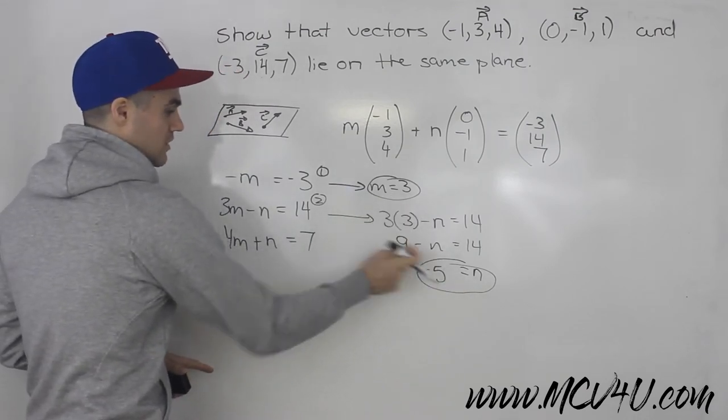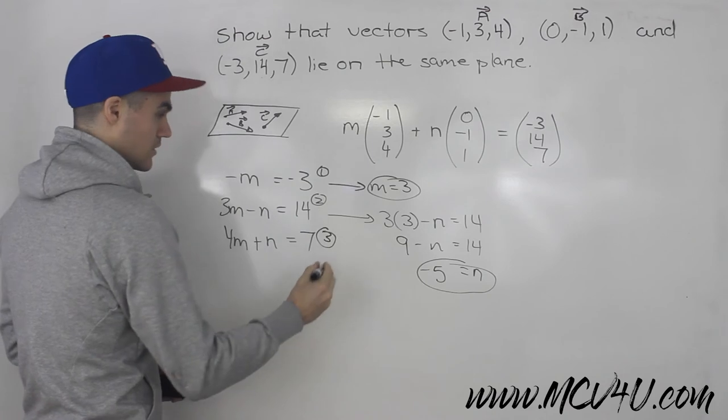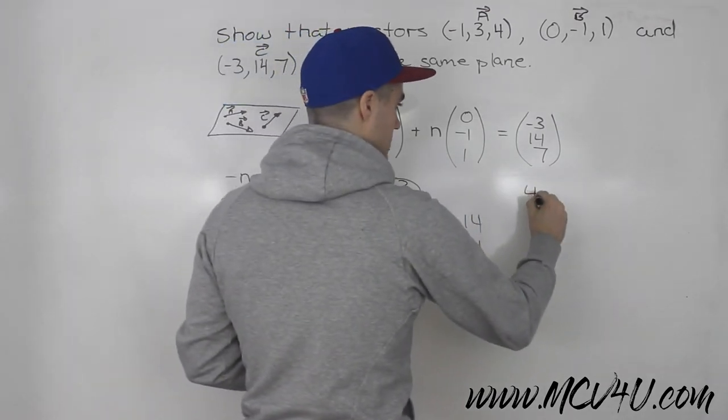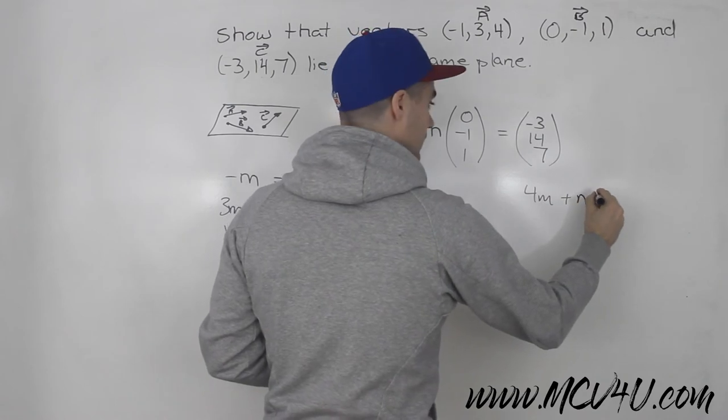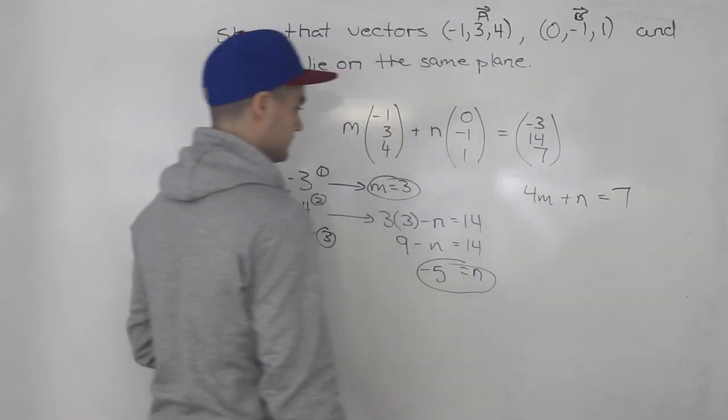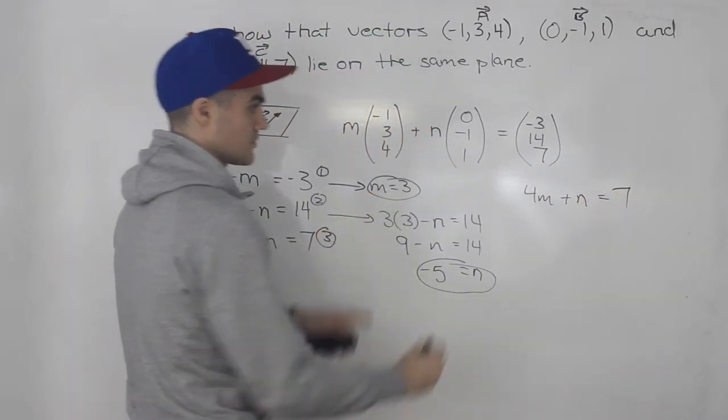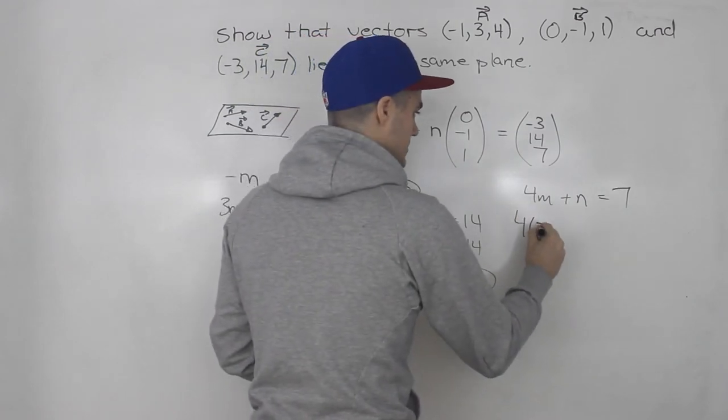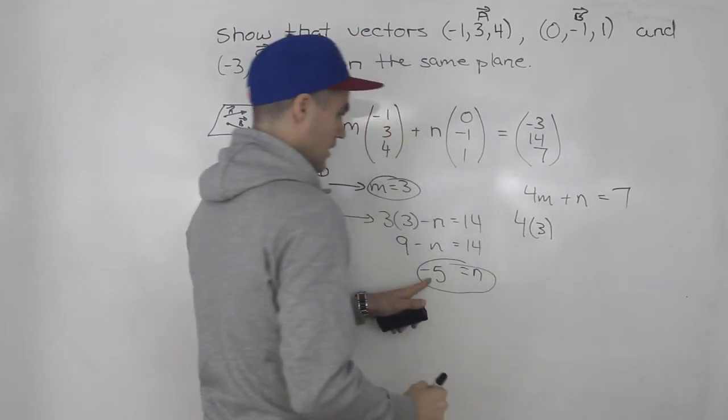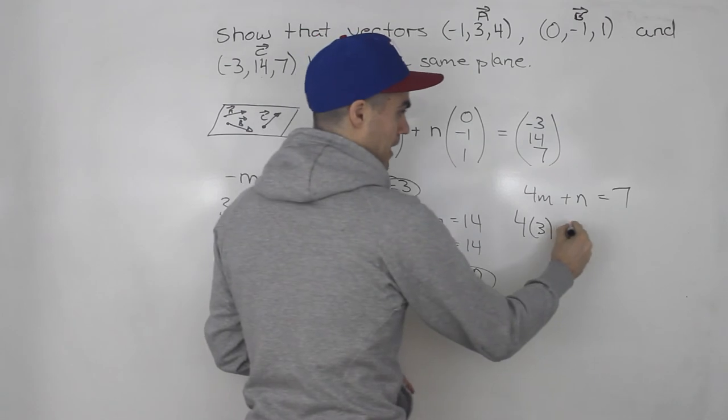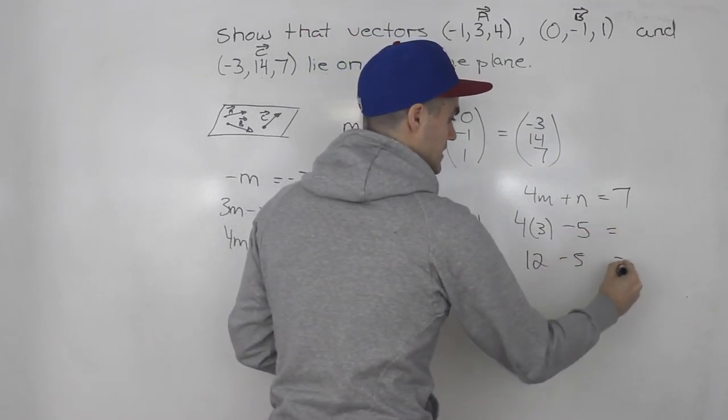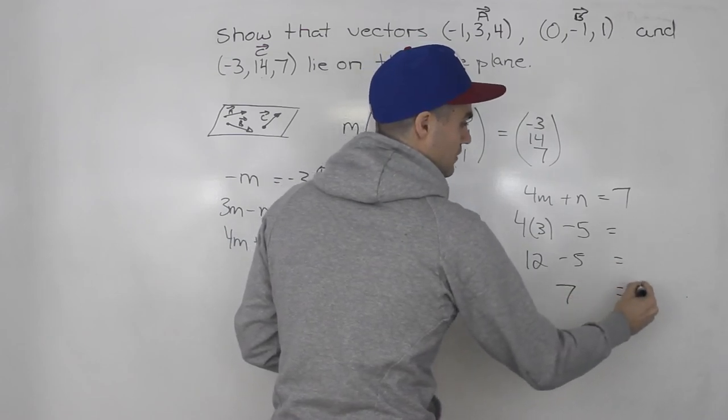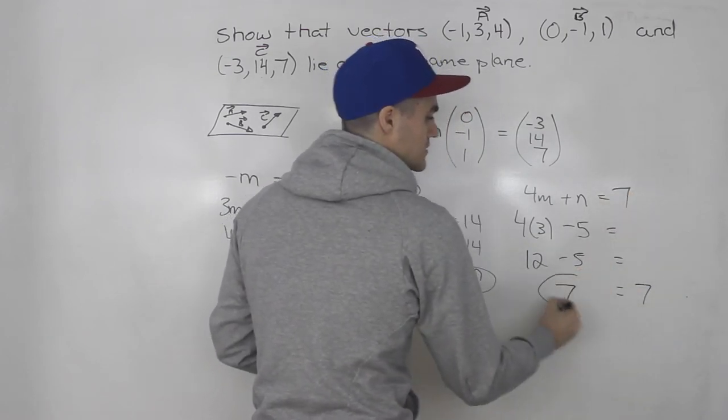And now we have to check whether these constants will hold for equation 3. So let's write it over here. 4m plus n is equal to 7. So let's plug these in. So we got 4 times 3, and then plus n, which is just minus 5. So we got 12 minus 5, and that indeed equals 7, which is what we are trying to get to.